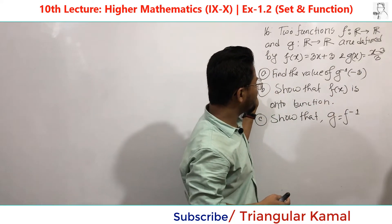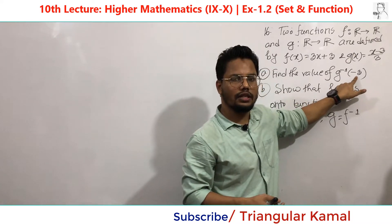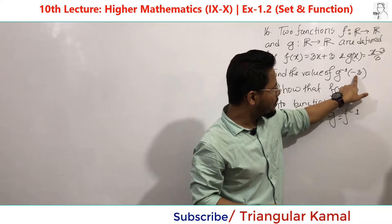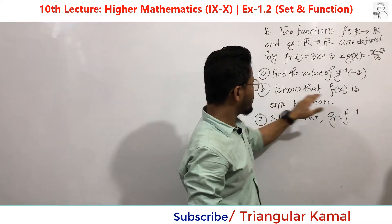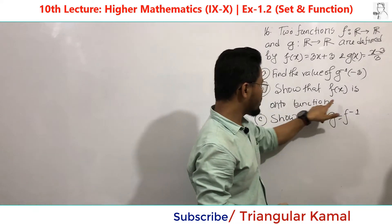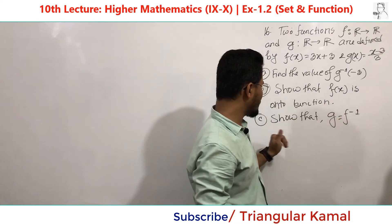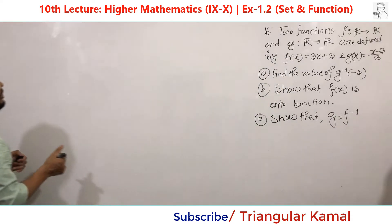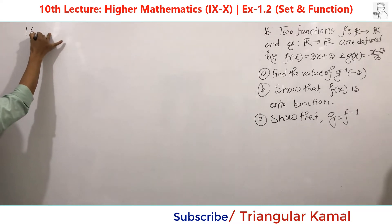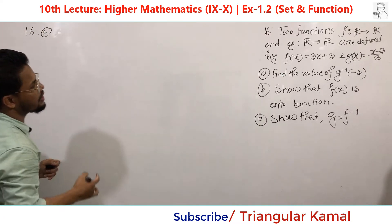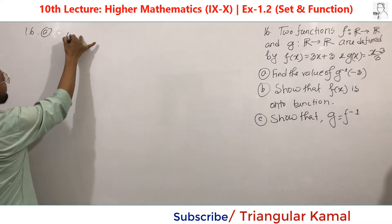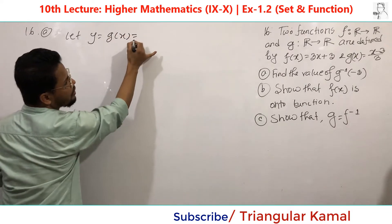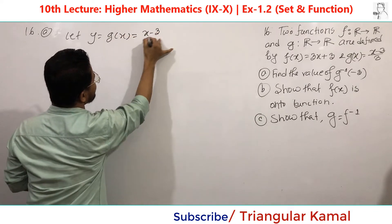The first requirement is to find G inverse of minus 3. That means you have to first find the inverse function, then find the functional value at minus 3. So F of X is an onto function — these types of questions we have already done in a previous class, so G equals F inverse of X. For question number 16A, first you have to find the inverse function of G. Let Y equal G of X equal X minus 3 divided by 3.